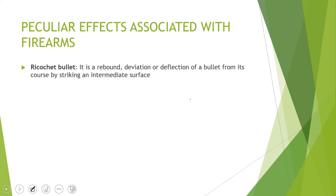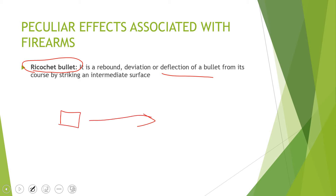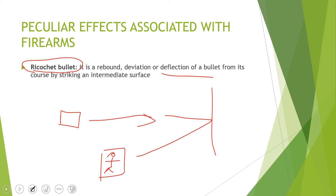Moving on to peculiar effects associated with firearms. The first is the ricochet bullet — the rebound, deviation, or deflection of a bullet from its course by striking an intermediate surface. For example, a bullet travels in one direction, strikes a wall, and deflects to hit a victim.